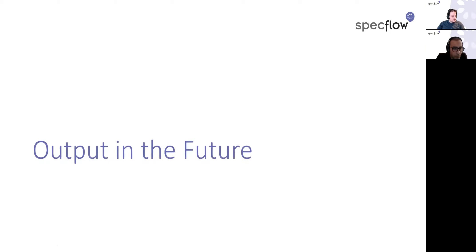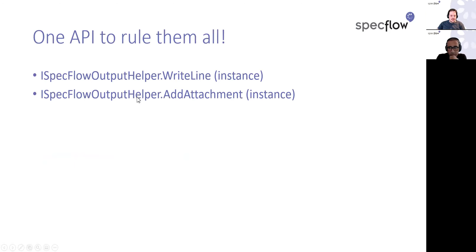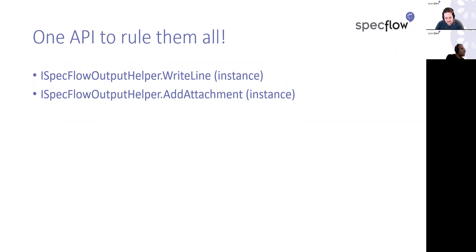We had an idea years ago and we've now implemented it: one API to rule them all. With SpecFlow 3.8, we call it the Output API. You need an instance of the ISpecFlowOutputHelper interface, which has two methods: WriteLine and AddAttachment. In the background, we do all the magic and call the right methods for you. You don't have to think anymore about which runner you're on. Remembering two different APIs when working across teams using NUnit and XUnit — that's now gone with SpecFlow 3.8.